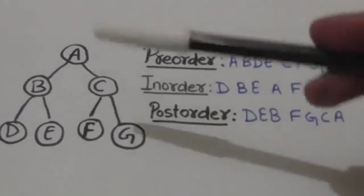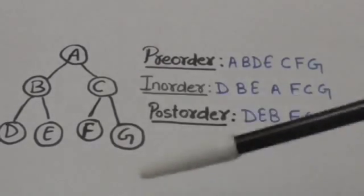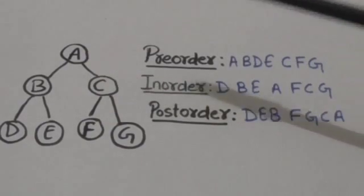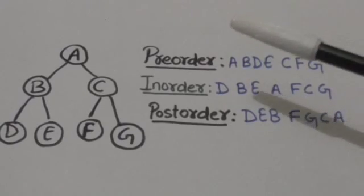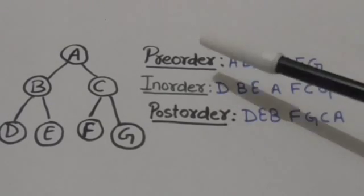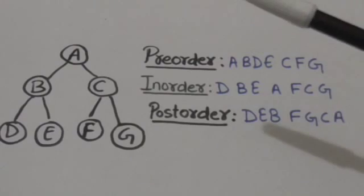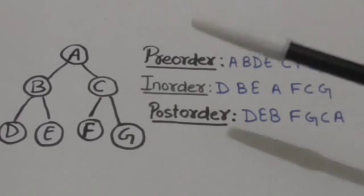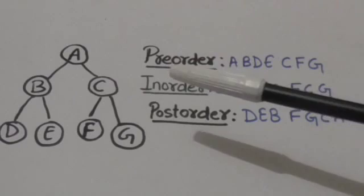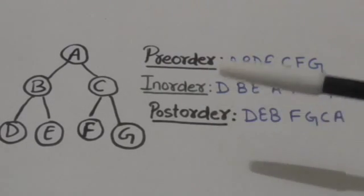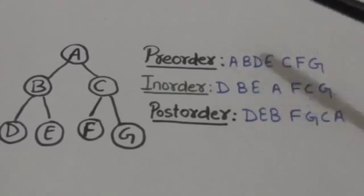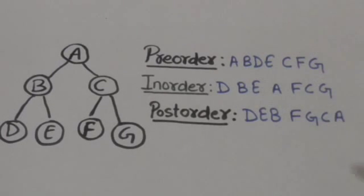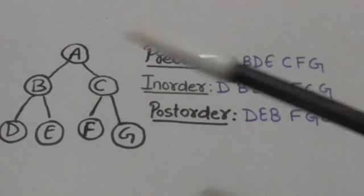Now see this binary tree T. The root of this binary tree T is A. In pre-order traversal, first root A is processed, then the left subtree of root A is traversed in pre-order, and then the right subtree of root A is traversed in pre-order. So first of all, root A will be processed.